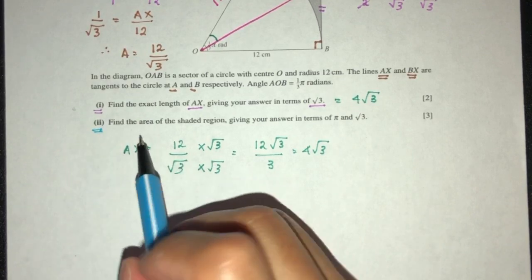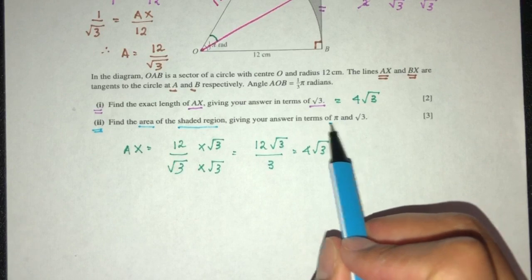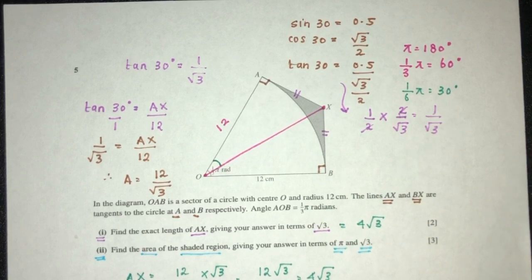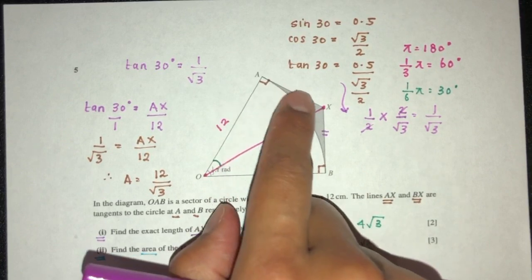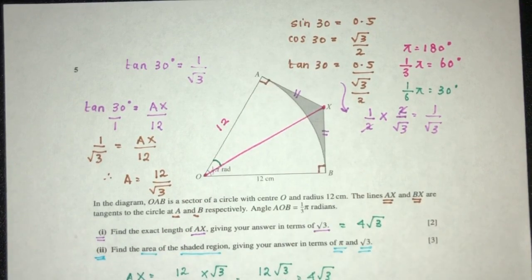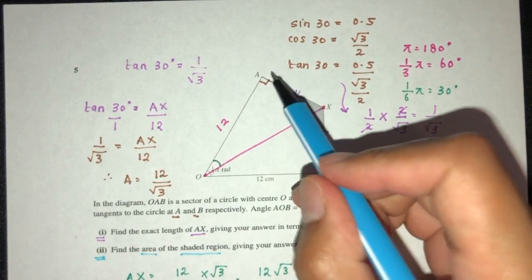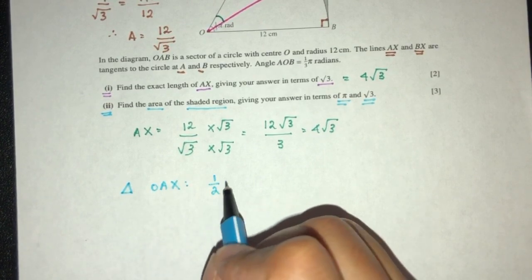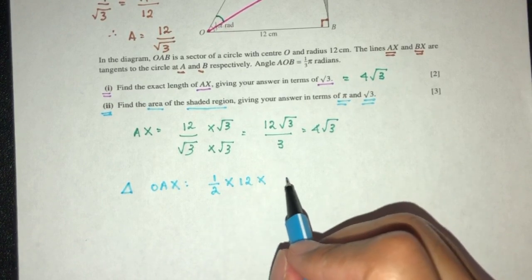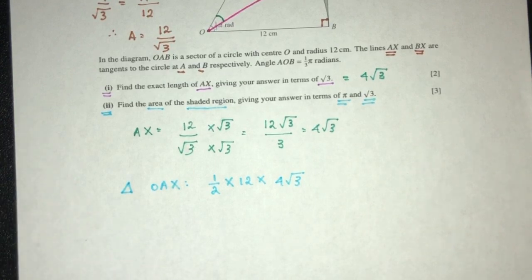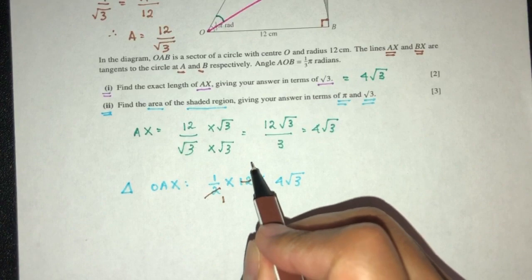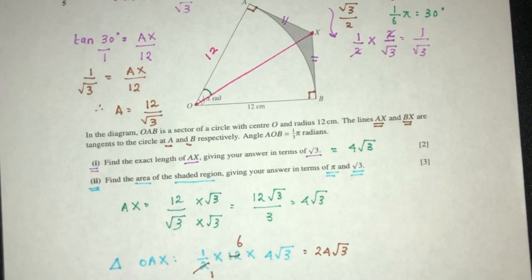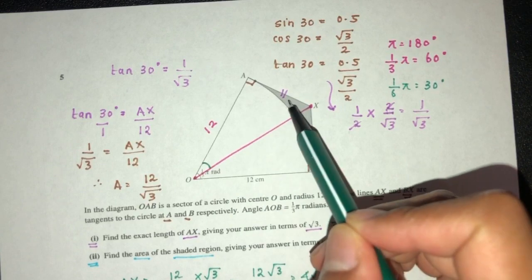For part 2, find the area of the shaded region giving your answer in the form of π and √3. This side is the same as this side, so find this one first and multiply by 2 to get both areas. Let me find the area of the whole triangle. Area of triangle OAX will be 1/2 times base times height, 12 times 4√3. That will be 24√3 for the area of this triangle.